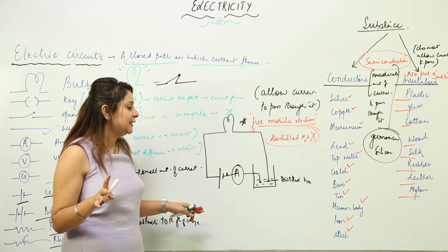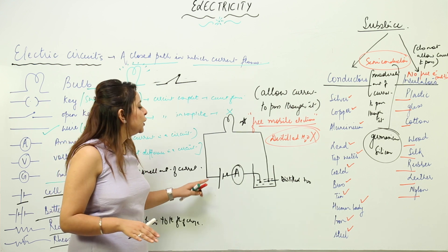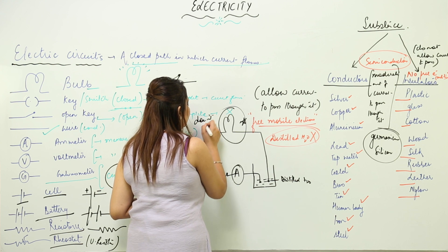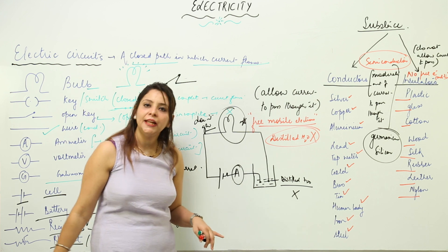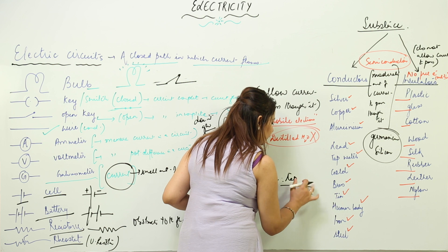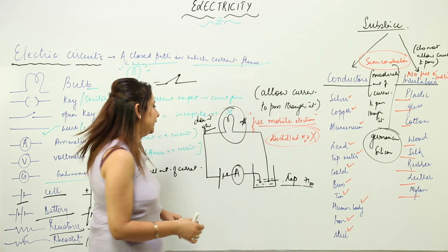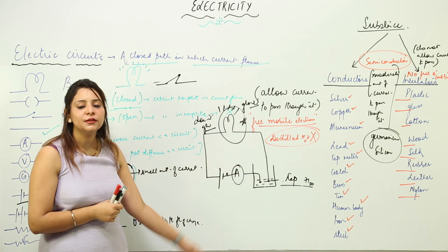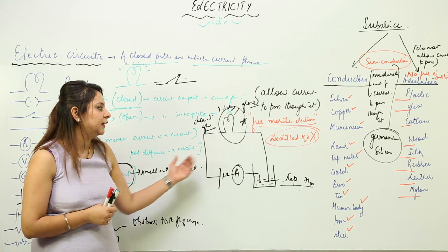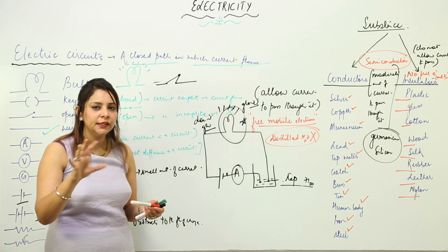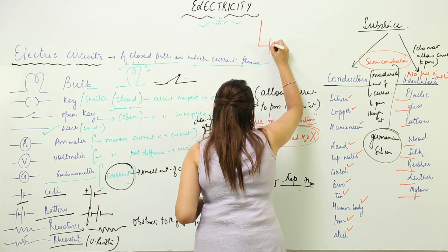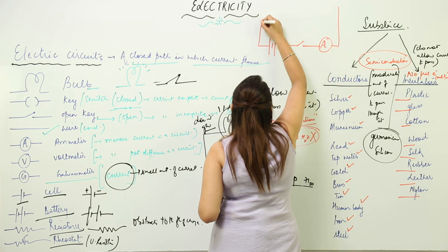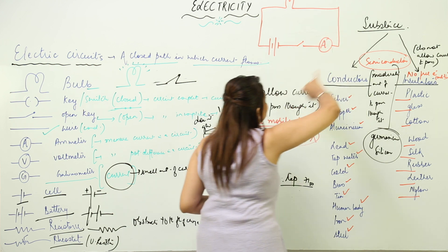If it is a good conductor, the bulb will glow; otherwise it won't. The circuit must be complete with no disconnections. With distilled water, the bulb does not glow, indicating it is a poor conductor. But when we replace it with tap water and close the circuit, the bulb starts glowing, proving that tap water is a good conductor of electricity. This is how you prove whether a substance is a good or poor conductor.